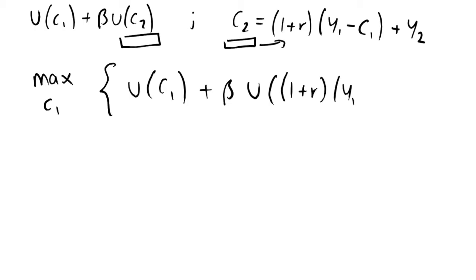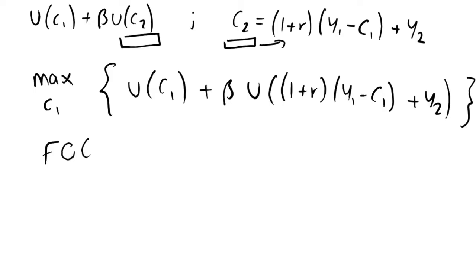After substitution the expression includes y1 minus c1 plus y2 — closing those brackets. Now we want to maximize this expression, so we take the first order condition with respect to c1 and set it equal to zero. The derivative of the first term is just written as u′(c1) — the derivative with respect to c1. We haven't specified the utility function, so we leave it in this general form.